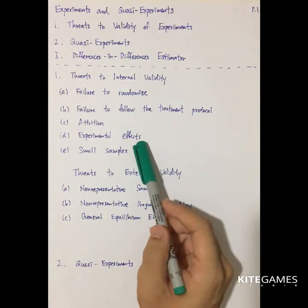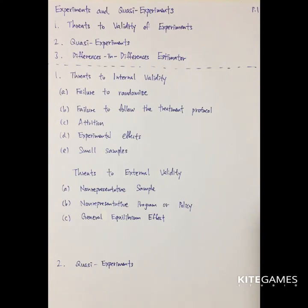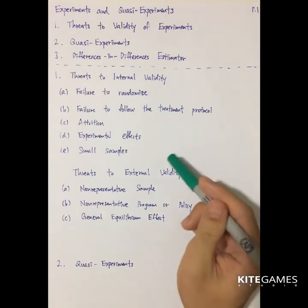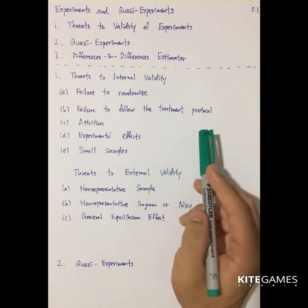Next is experimental effects. This means that the subjects being studied know that you are doing experiments on them, and then they change their behavior. For example, when testing whether a compensation plan can increase labor productivity, the subjects know they are being experimented on, so they work harder — and as a result, the results are biased. Finally, small samples: with small samples, the law of large numbers and central limit theorem cannot be applied, and they cannot represent whole populations. These five are examples showing that the sample fails in explaining the population.